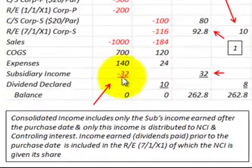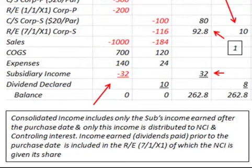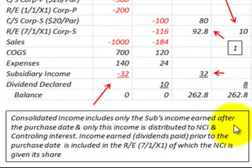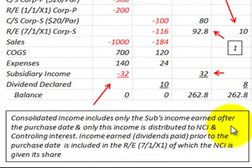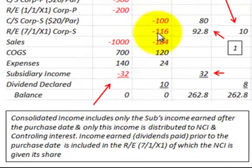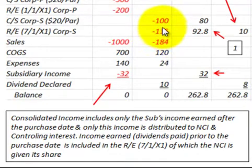Finally, to make a point about the subsidiary income recorded on the trial balance for the parent: the parent would be receiving $32,000. The consolidated income includes only the sub's income earned after the purchase date, and only this income is distributed to the non-controlling interest and the controlling interest. Income earned and dividends paid prior to the purchase date on 7-1 is included in the retained earnings updated on 7-1, of which the non-controlling interest will receive their share.